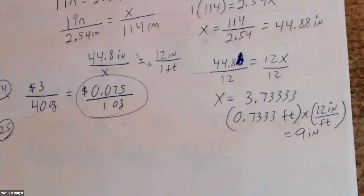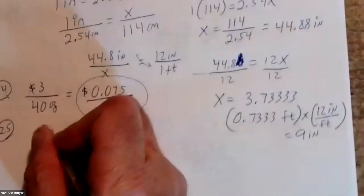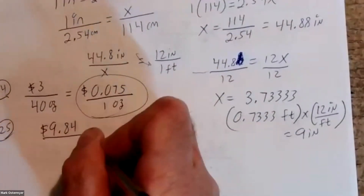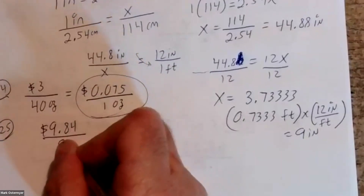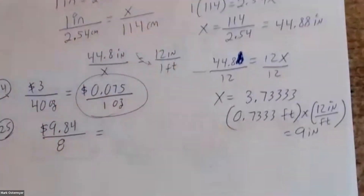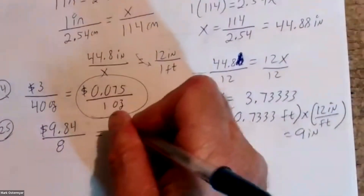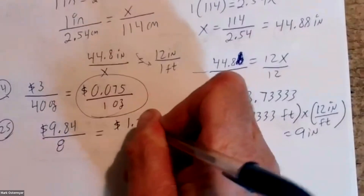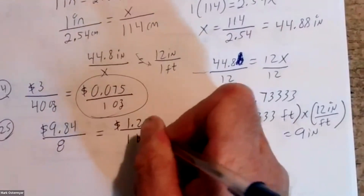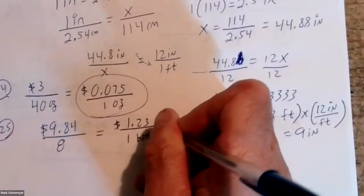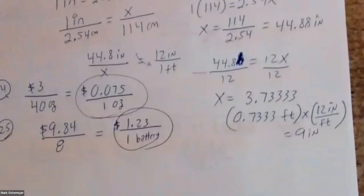Number twenty-five: what is the unit cost of eight triple-A batteries that cost $9.84? Nine dollars and eighty-four cents for eight batteries. What's 9.84 divided by eight? That gives you $1.23 per battery — that's the unit cost.